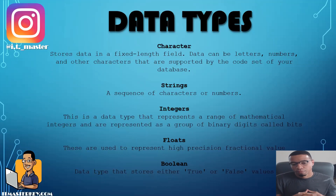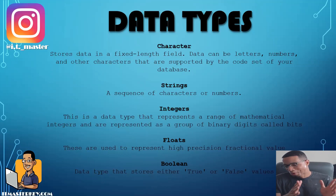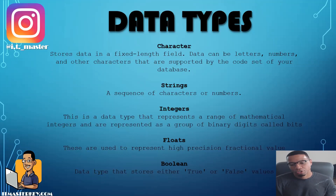Next up is floats. These are used to represent high-precision fractional values. Last but not least is Boolean — true or false values. So the five data types are character, strings, integers, floats, and Boolean.